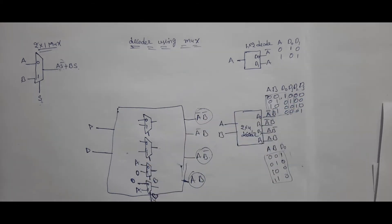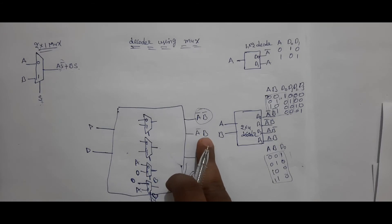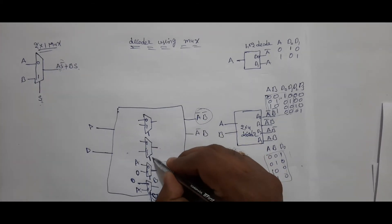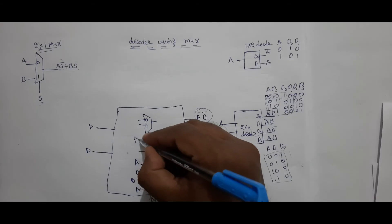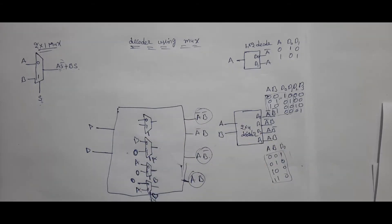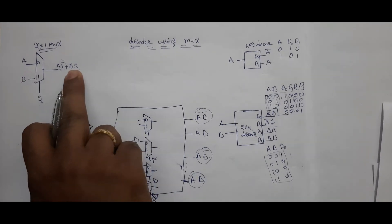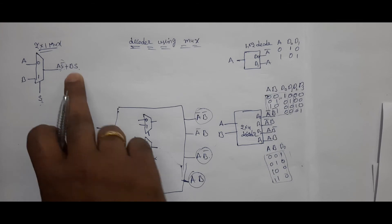If you interchange the inputs, then A-bar B will come into picture instead of A B-bar. That's why here: input 0 is A, input 1 is B, and position 0 is connected to 0. If you put 0, only this term will go as 0; otherwise it will not go as 0.